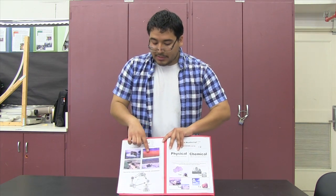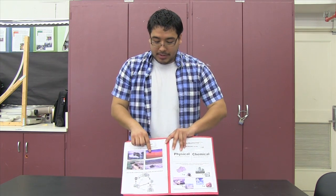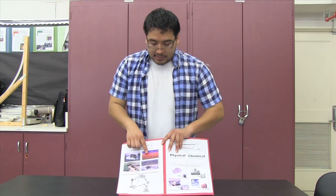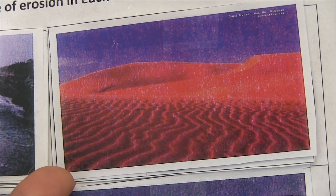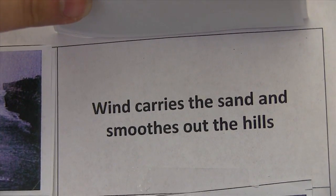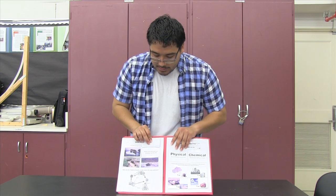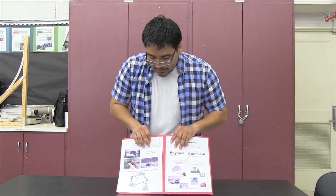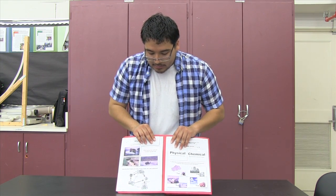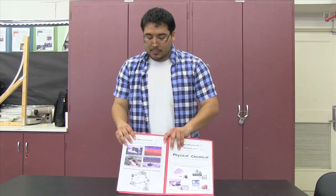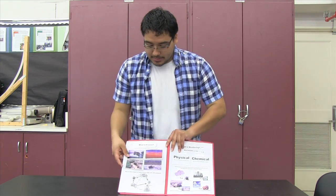We just did this one. So there's wind blowing around the sand dunes. So what's going to happen? It's going to move the sand, just like our example, right? Wind carries the sand and smooths out the hills. So that's caused by wind.